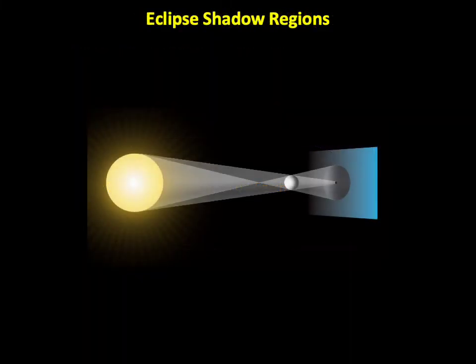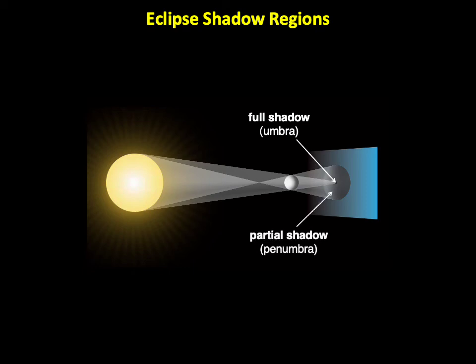To understand what we actually see during eclipses, it helps to visualize the three-dimensional shadow of a world like Earth or the Moon, falling on a giant screen behind it. This diagram shows the shadow geometry, with the lines showing where light from opposite edges of the Sun would fall. Notice that the shadow has two distinct regions. The smaller, central shadow, called the full shadow, or umbra, is the region in which light from the Sun is completely blocked. Surrounding the full shadow is a larger partial shadow, or penumbra, in which light from only part of the Sun is blocked.